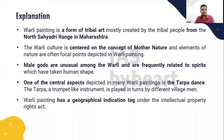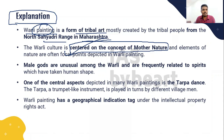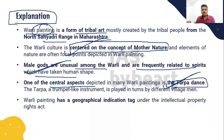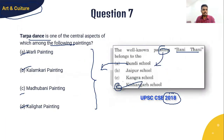The explanation: Warli painting is a form of tribal art from the North Sahyadri range in Maharashtra. The Warli culture is centered on the concept of mother nature. One of the central aspects of Warli painting is the Tarpa dance. The Tarpa is a trumpet-like instrument played in turns by different village men. Warli painting has a Geographical Indication tag under Intellectual Property Rights — an important fact for the upcoming prelims. Therefore, the correct answer is Warli painting. Tarpa dance is associated with Warli painting.